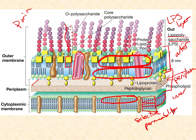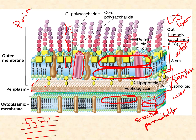Embedded within the periplasm is the true cell wall — this structure made of peptidoglycan. Peptidoglycan is long, parallel strands of polysaccharides (the glycan part), cross-linked by short peptide chains of nine or ten amino acids, giving it a very porous but rigid structure. With gram-positives, the cell wall is roughly 40 layers of peptidoglycan thick. In gram-negatives, it's only six, seven, maybe eight sheets thick — a much thinner peptidoglycan, contained within the periplasm.